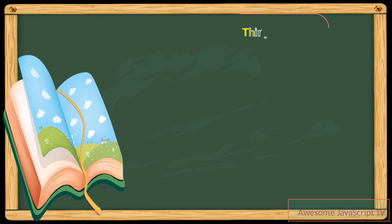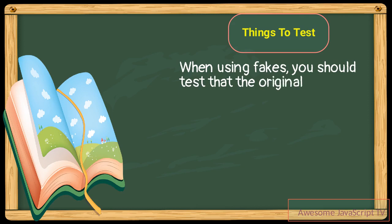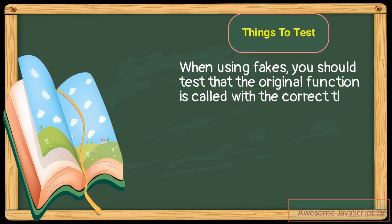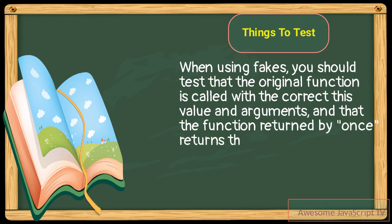When using fakes, you should test that the original function is called with the correct this value and arguments, and that the function returned by once returns the value returned by the original function.